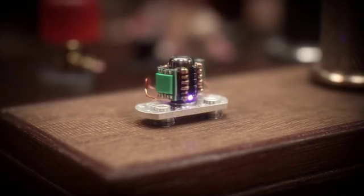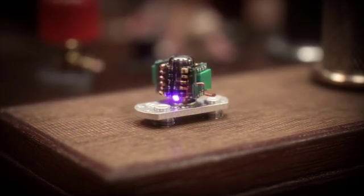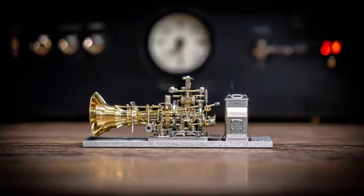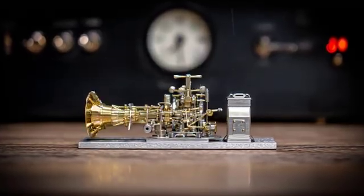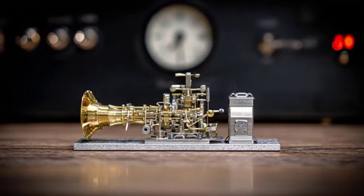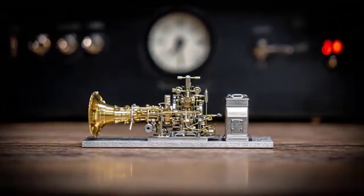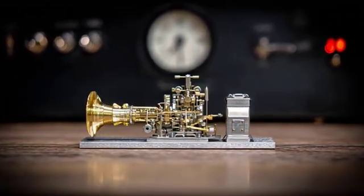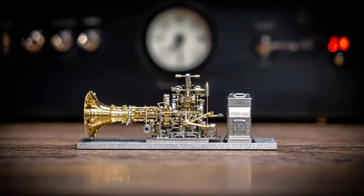Here is how the Brownian ratchet is imagined. Imagine a small paddle wheel immersed in a liquid, constantly bombarded by molecules in random thermal motion. The paddle wheel is connected to a ratchet mechanism that allows it to rotate in only one direction, like the gear in a clock.